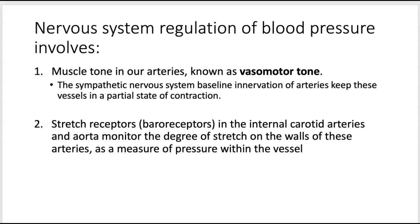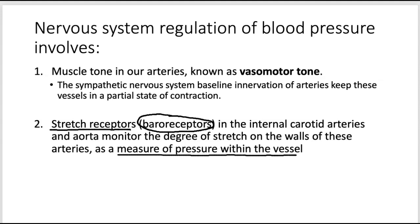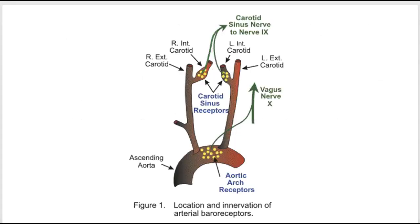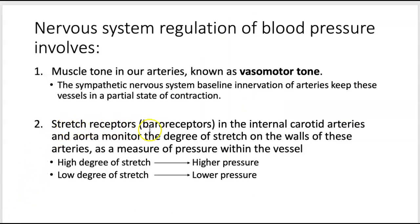The other baseline concept is that we monitor our blood pressure through stretch receptors, known as baroreceptors. Baroreceptors are stretch receptors located in two places: the internal carotid arteries and the aorta. What they do is monitor the degree of stretch on the walls of these vessels, which acts as a measurement of pressure within the vessel. Here in the diagram, there are stretch receptors shown in the aorta and in the internal carotid arteries. A high degree of stretch is interpreted as higher pressure in the vessel.